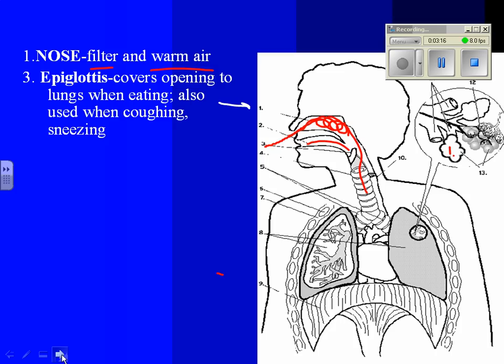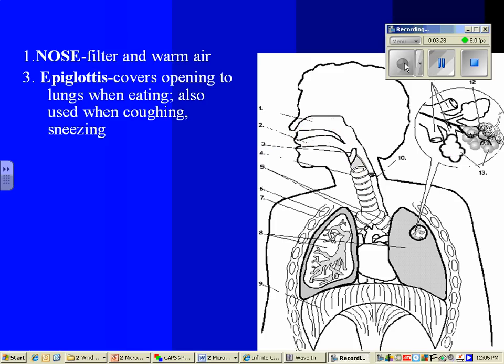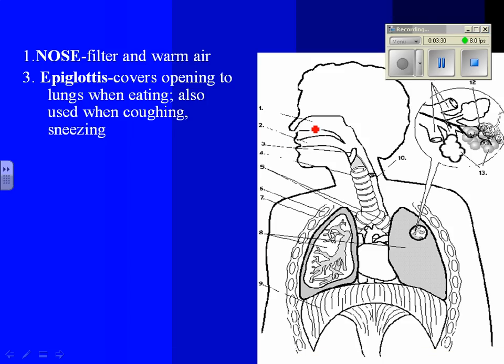This little flap here is called the epiglottis, number three. I don't know if you've gotten there in your cat yet. The epiglottis covers the opening to the lungs when you're eating, and you use it when you're coughing and sneezing. So air comes in your nose, and if the epiglottis is open, it passes down into there.